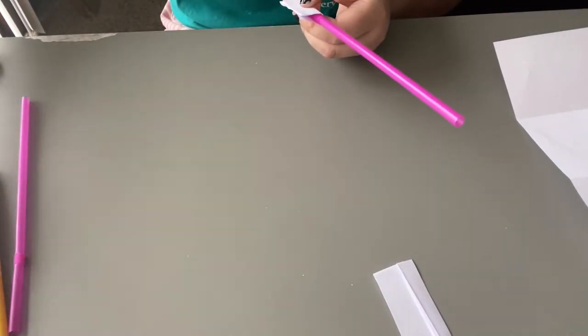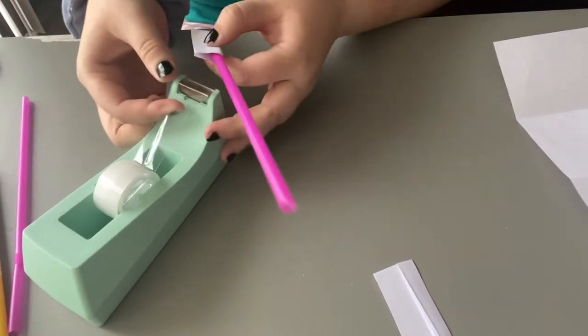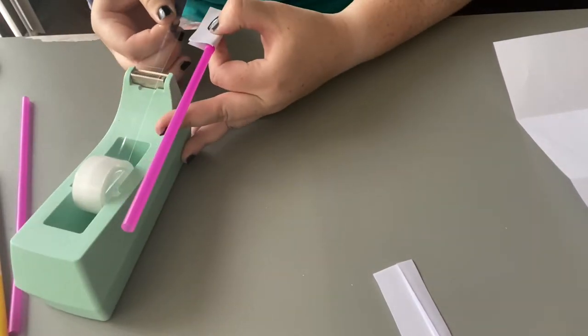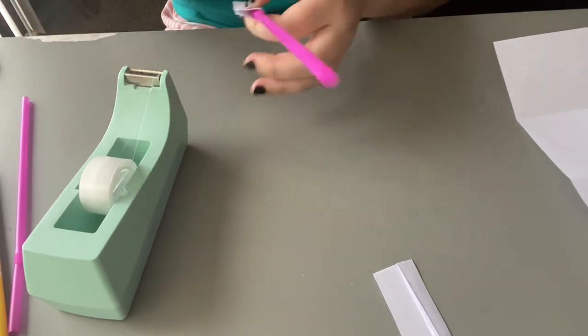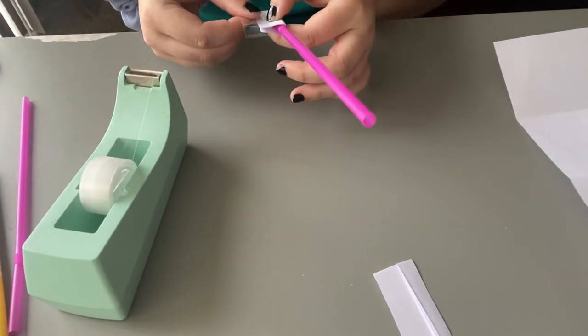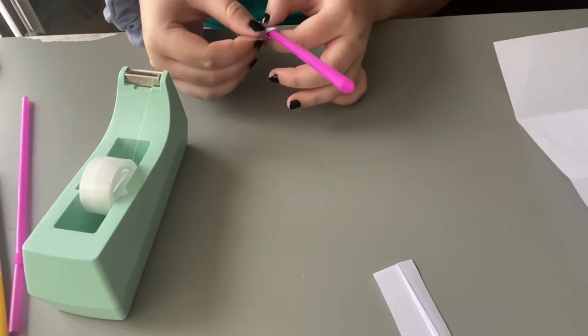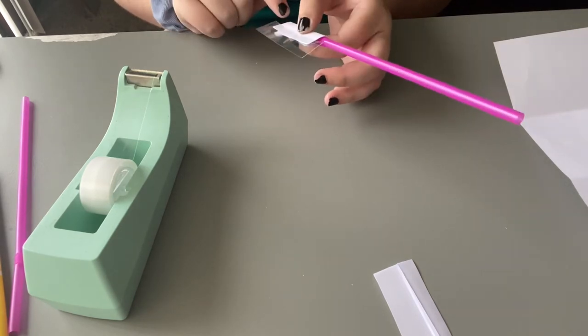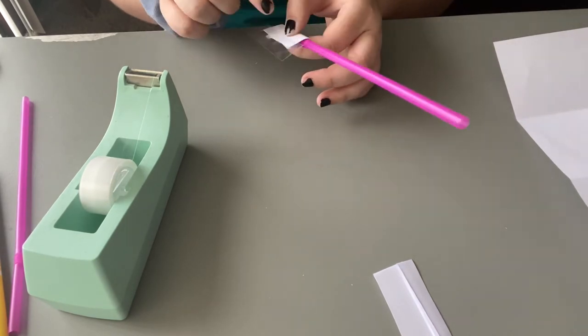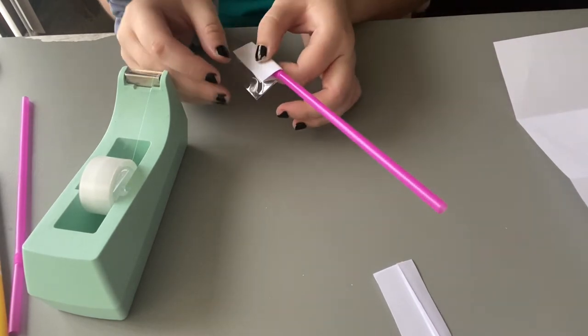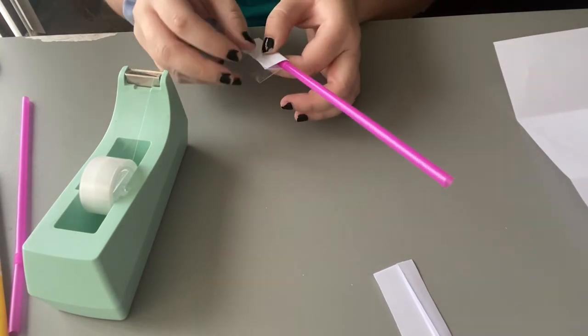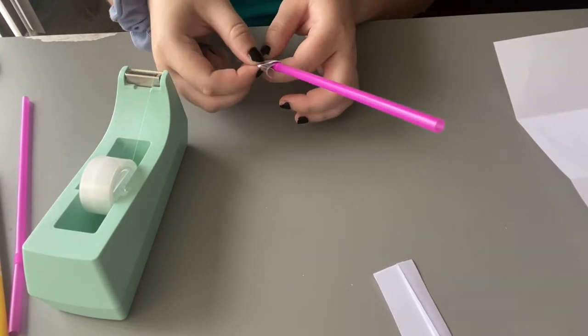And now we're going to take our tape. I'm going to get a long piece so I can just cover this whole area here because we want to make sure that no air escapes. We want all our air to be trapped in the rocket so that way it can just launch off perfect.